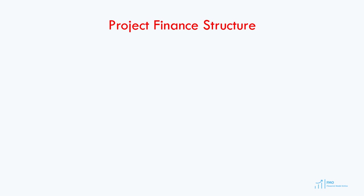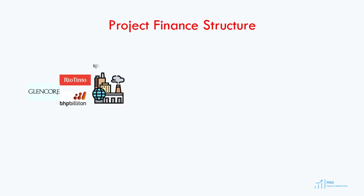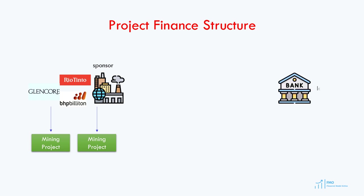In a project finance transaction in the mining industry, the principal players are the sponsor, which is developing the mining project, and the lender, or a consortium of lenders that will provide the debt financing. To raise the debt financing, the sponsor will have to set up a Special Purpose Vehicle, or SPV, which will be ring-fenced.